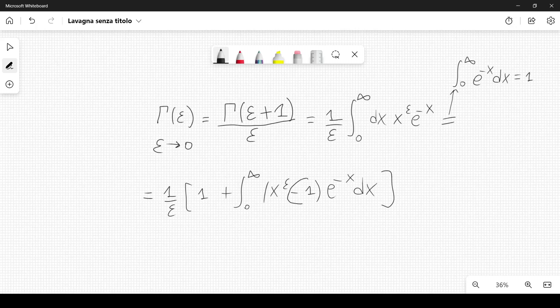You can see that I have subtracted 1 from this function, so I have to add 1 because this integral is equal to 1. So this can be written as 1 over epsilon plus integral from 0 to infinity of x to the epsilon minus 1, over epsilon, e to the minus x dx.